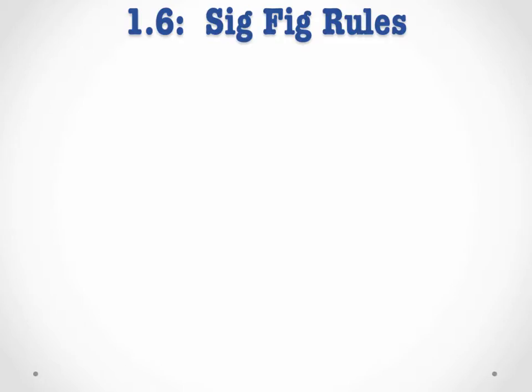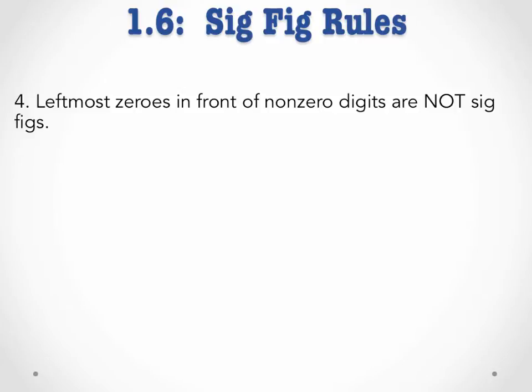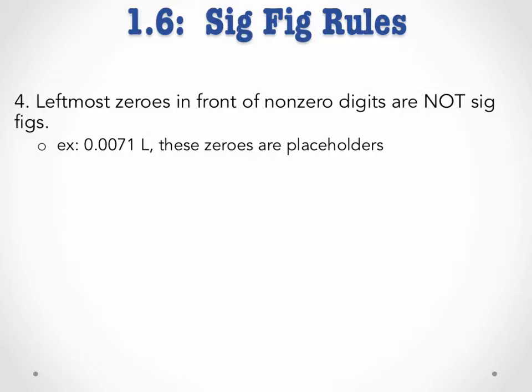Now let's take a look at two rules that tell us when zeros in a measurement are not significant. First, leftmost zeros in front of non-zero digits are not sig figs. In the measurement 0.0071 liters, the zeros in front of the non-zero numbers are not significant because they're merely placeholders. We could remove them by writing this number in scientific notation or by converting to a different unit. Therefore, this measurement only has two sig figs: the 7 and the 1.